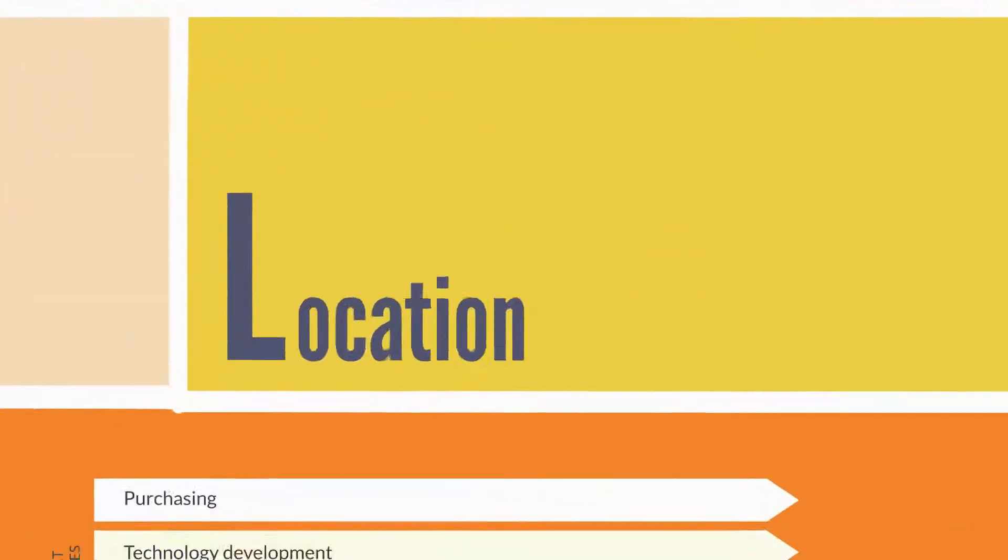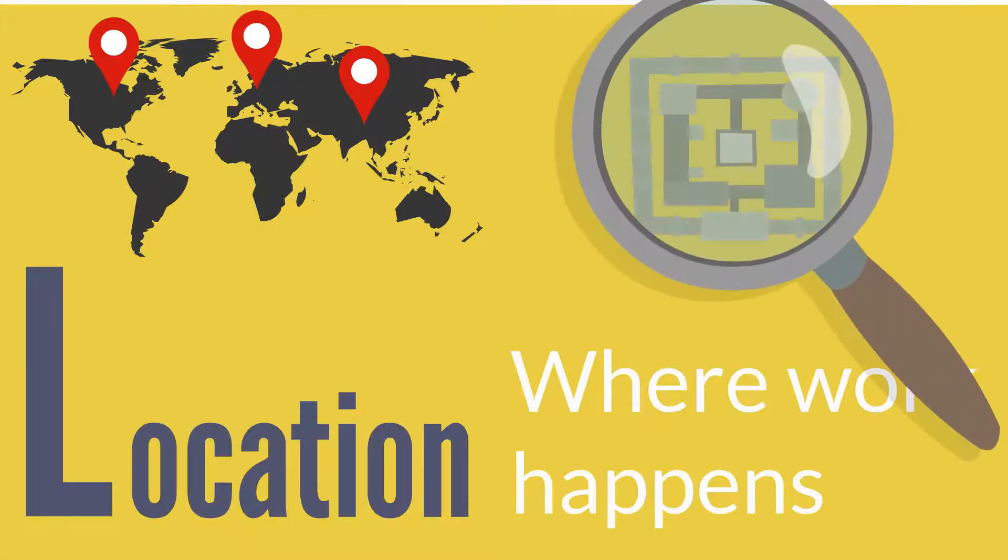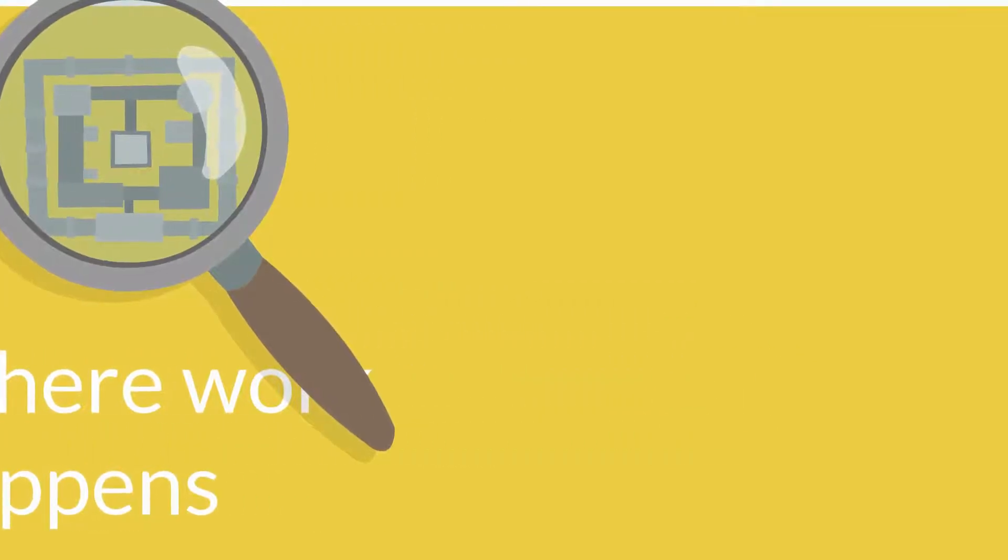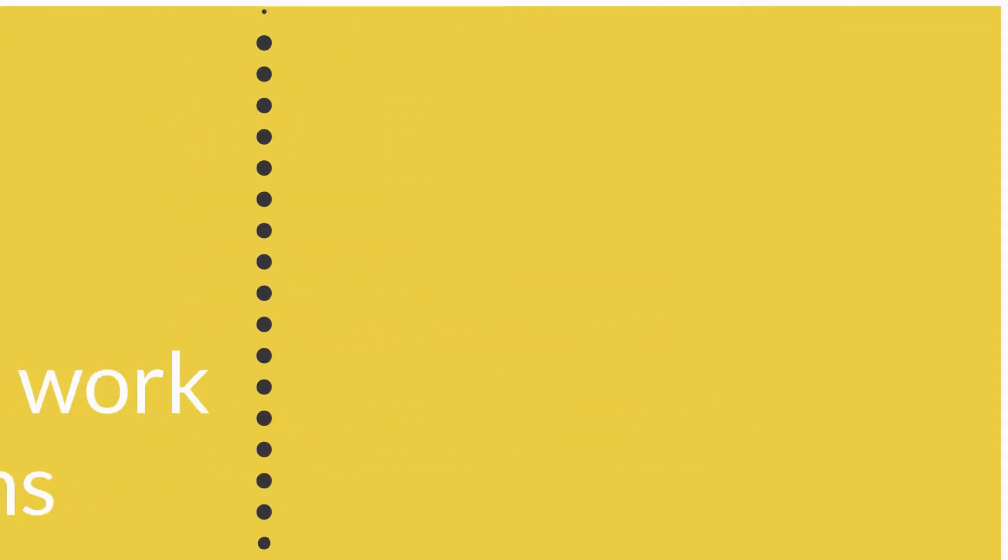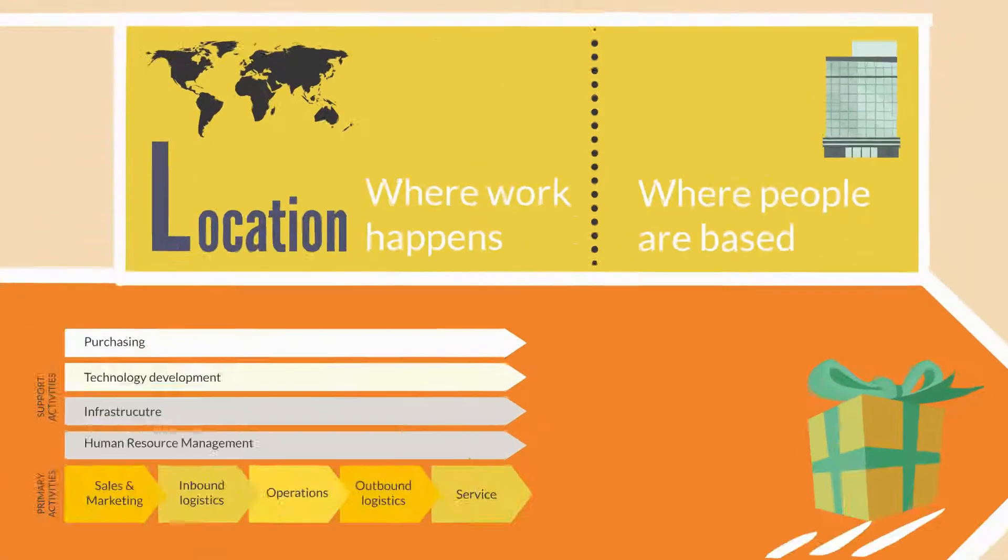Location is used to capture where the people in the organization are based and where the work outlined under processes is going to be done. Depending on the level that we're mapping, location can represent the countries or regions where the work happens or it can map the locations within a facility where activities take place. It can be helpful to split this box in order to consider both where the organization's sites are located and where the output delivery occurs.